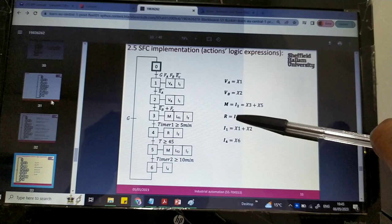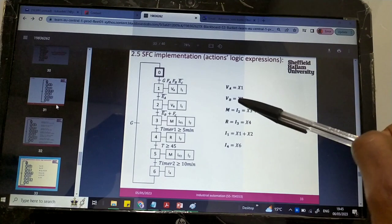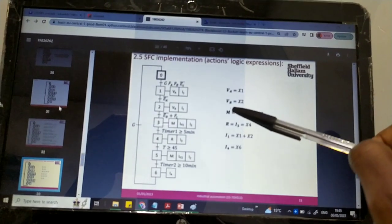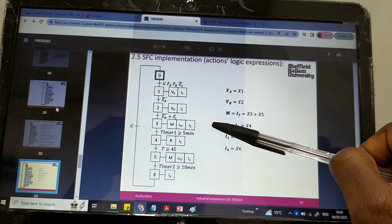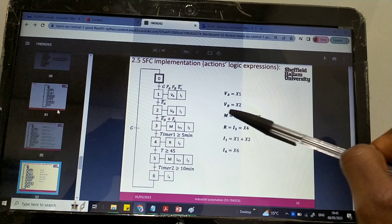VB only appears here, so it's equal to state 2. M is an important one—it appears here and here, so it's state 3 and state 5. That's also the same with I2, appearing in just those two places, so it has the same expression as M.